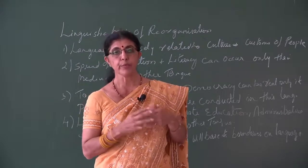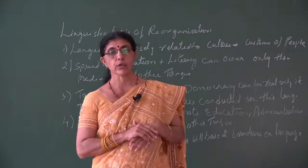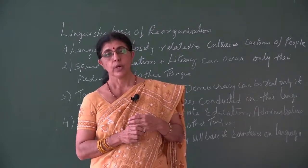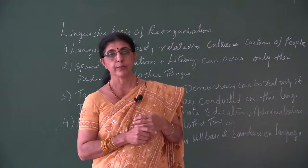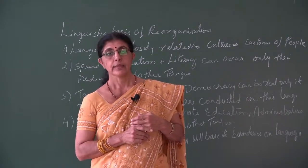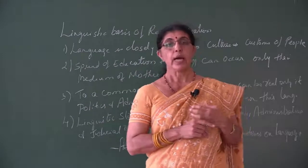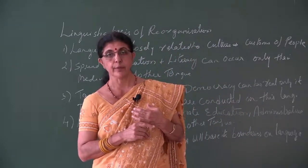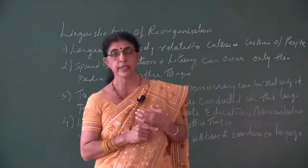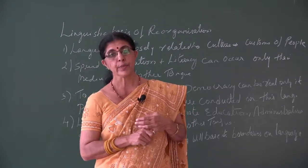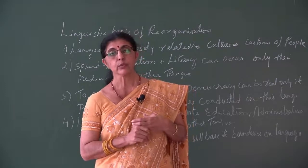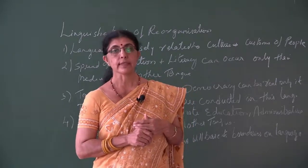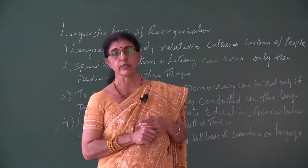This movement grew stronger day by day. In 1952, Potti Sriramulu undertook a fast unto death, saying he would fast until Andhra was given a separate identity. Within 58 days of his fasting, he died. But immediately after that, the government took the decision and Andhra was given its separate independent status in 1953.